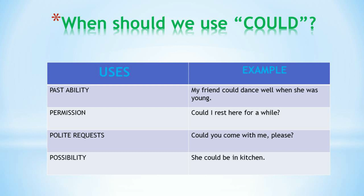For permission: 'Could I rest here for a while?' For polite request: 'Could you come with me, please?' For possibility: 'She could be in the kitchen.' So 'could' is used for past ability, permission, polite requests, and possibility.